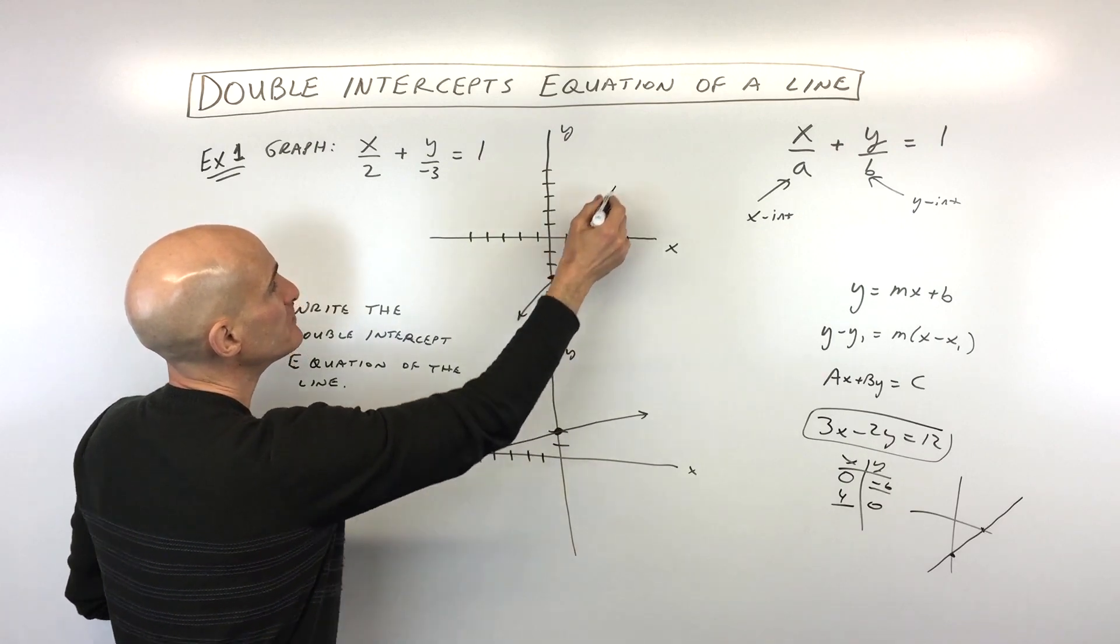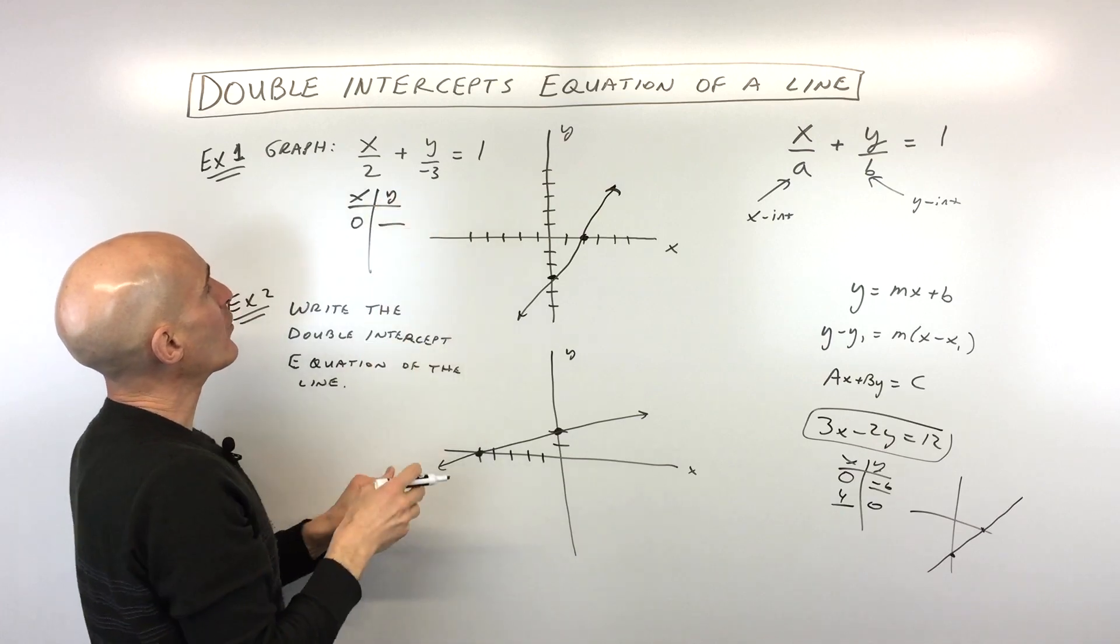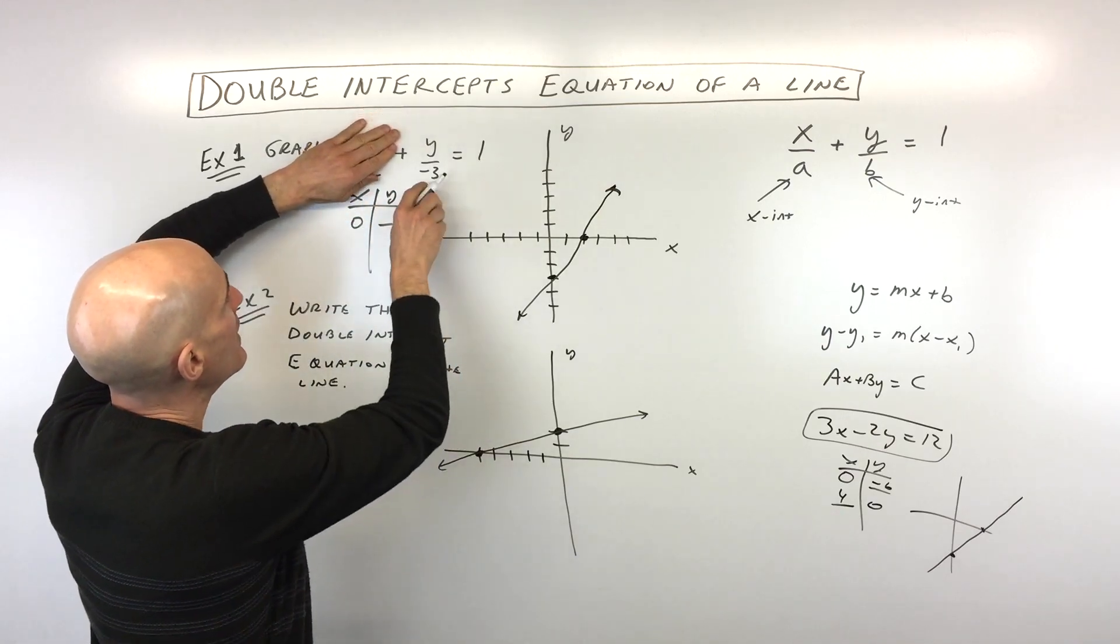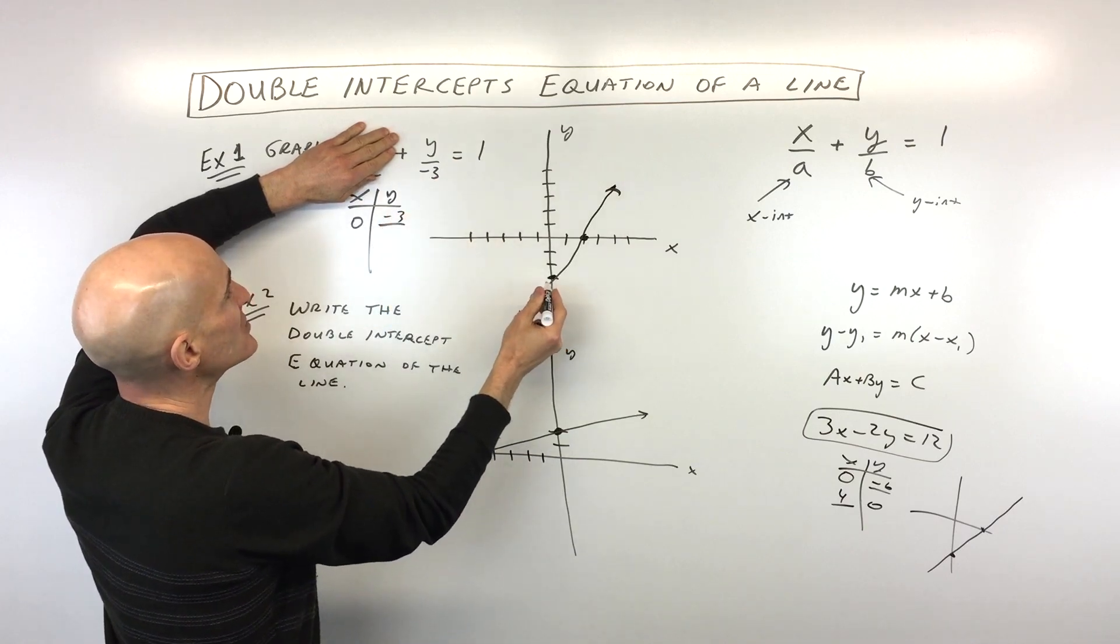If you substitute in 0 for x, just to show you why it works, so 0 over 2 is 0. If I multiply both sides by negative 3, you're going to see that y is equal to negative 3. There's our y-intercept.